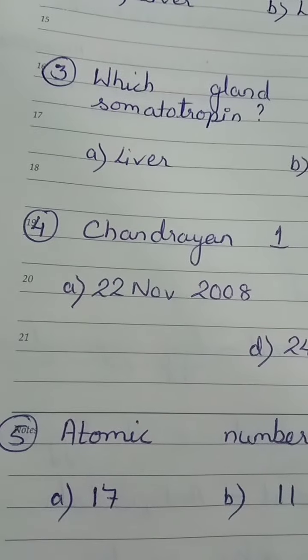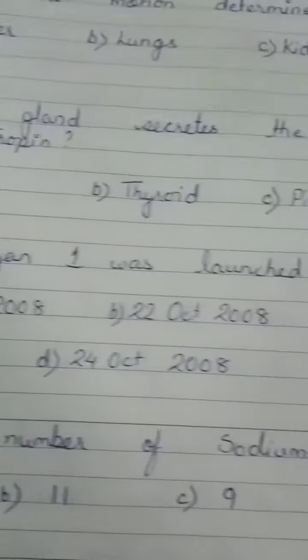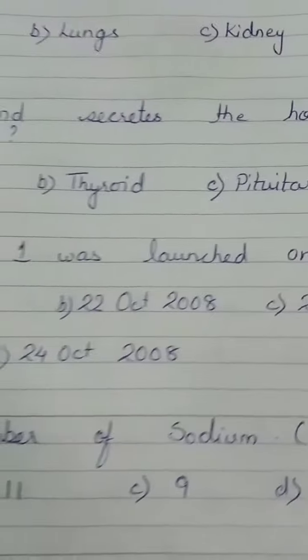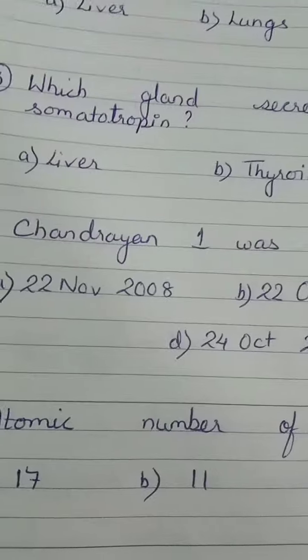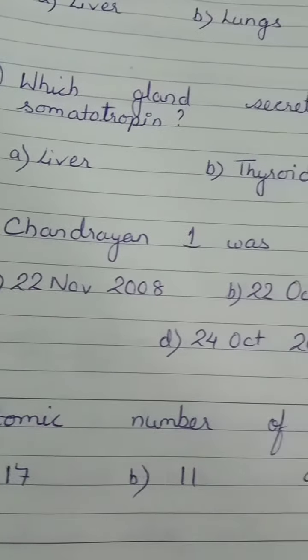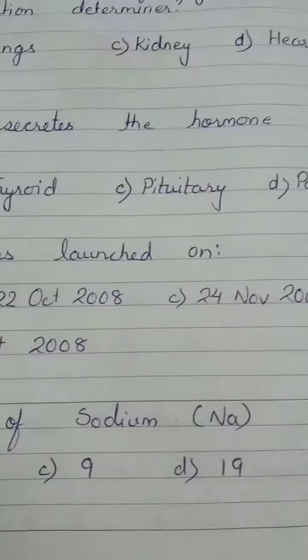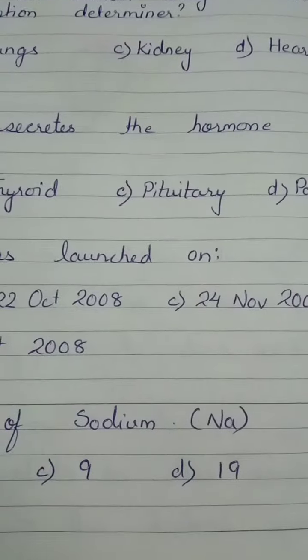Last question for you all: atomic number of sodium. Options: 17, 11, 9, 19.